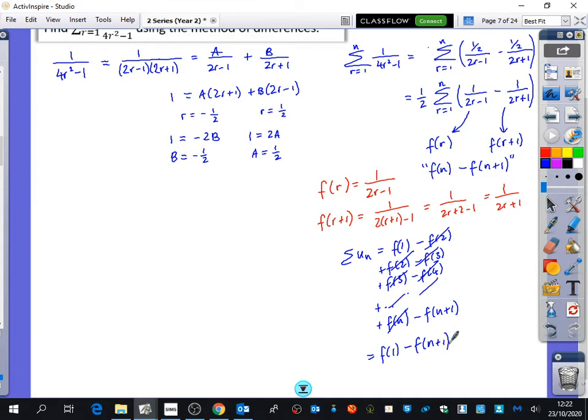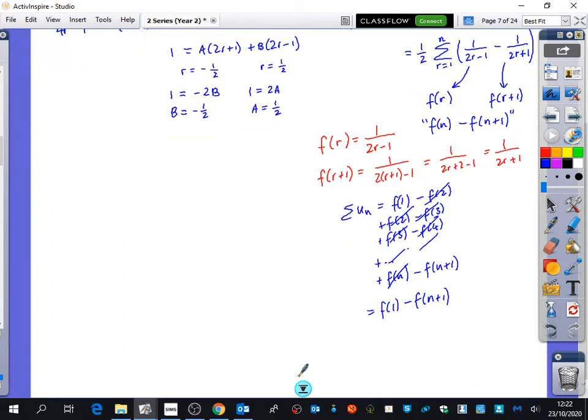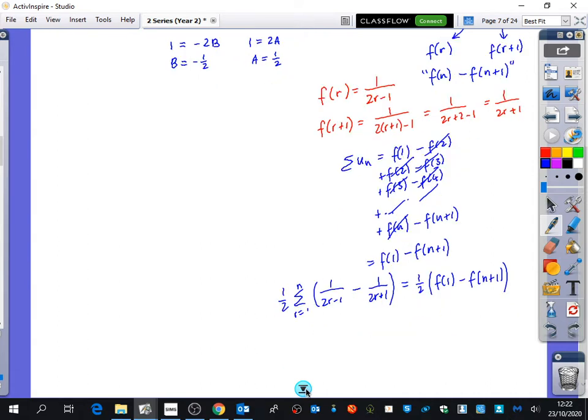I'm going to do it the manual way afterwards as well. So our one that we've got, which is up top here, we know that a half the sum from r equals 1 to n of 1 over 2r minus 1 minus 1 over 2r plus 1 is just going to be equal to a half times f of 1 minus f of n plus 1. And so, f of 1 is just substituting 1 into this thing, which is... What's f of 1 from here? 1.